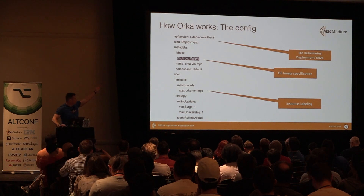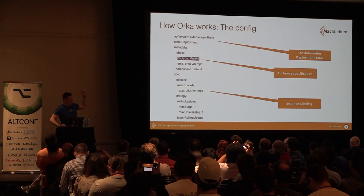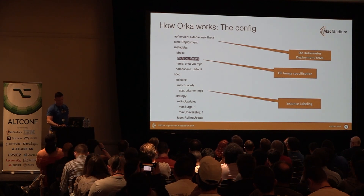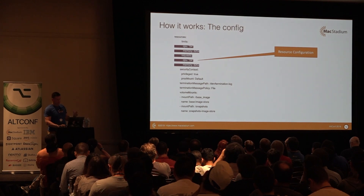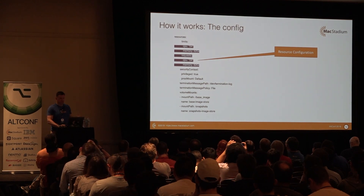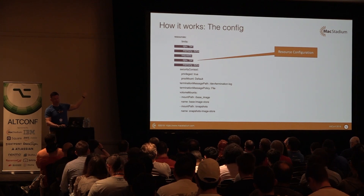Here's an example of one of the configs. You can literally put whatever image type — whether that's Mojave, Catalina, or High Sierra — and name it however you like. Specify the cores, the RAM, the memory, anything you need to describe the container state that runs your OS, whatever kind of Mac and however much power you want.